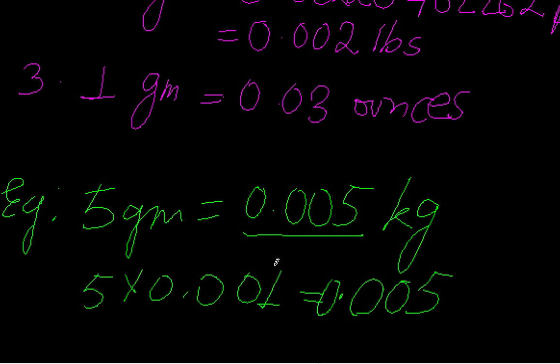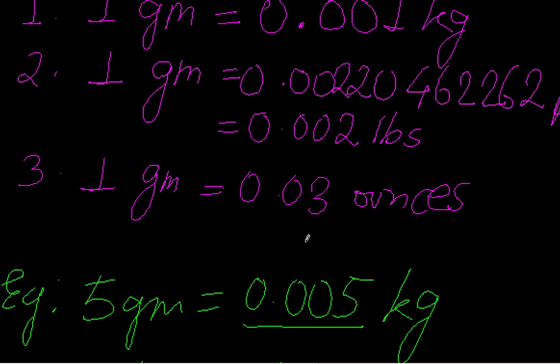Similarly, if somebody asks how much is five grams equals to how many pounds, I have to just multiply five with this number. If it is asked five gram equals to how much ounces, I have to just multiply five into zero point zero three.